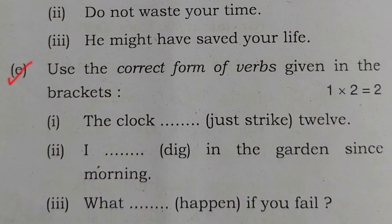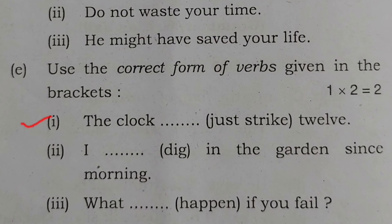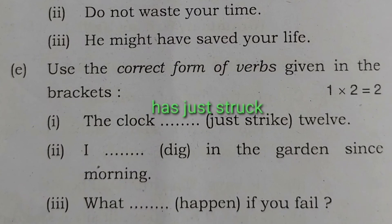Here is Part E - fill in the correct form of verbs. The first sentence is: 'The clock dash 12' with bracket 'just strike.' Jahan par 'just' ho, wahan present perfect tense aata hai. Toh yeh ho jayega: 'The clock has just struck 12.'